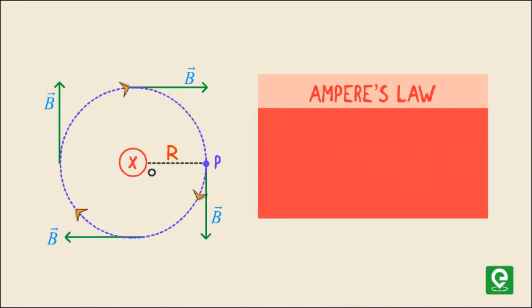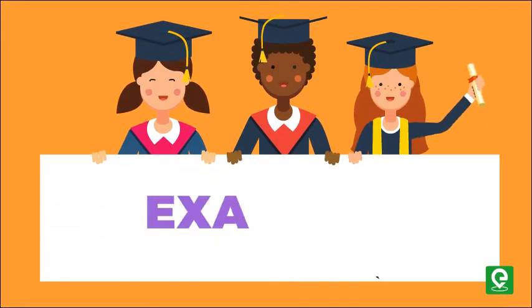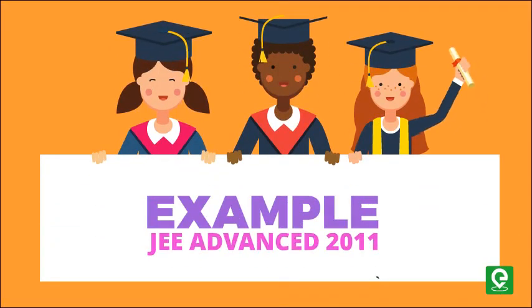Thus by Ampere's law, B(2πr) = μ₀I. This implies magnetic field B = μ₀I/(2πr). Let's take another example which was asked in JEE Advanced 2011 exam.